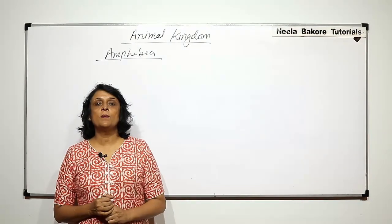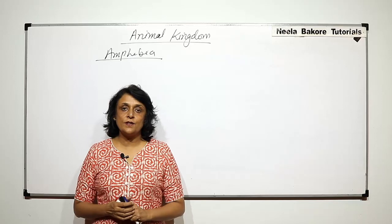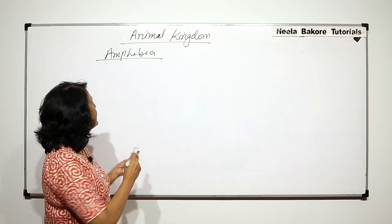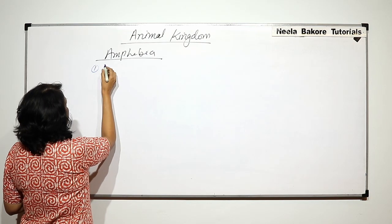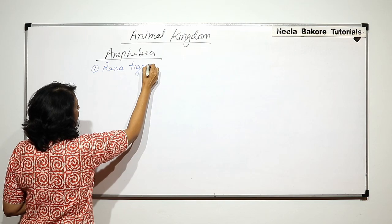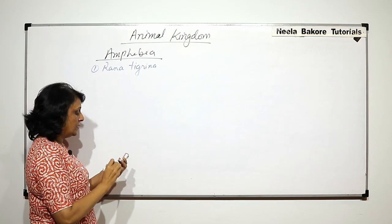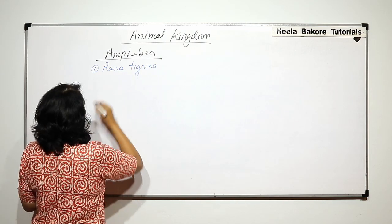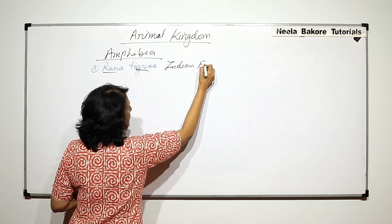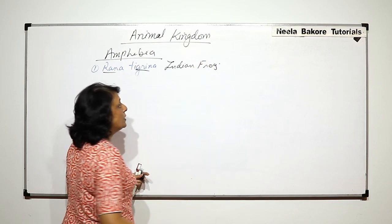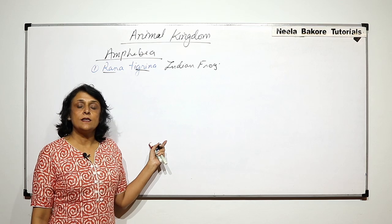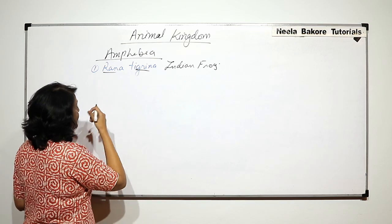In the previous part we talked about all the general characteristic features of Amphibia. Now we will take some important examples. The first example is Rana Tigrina, which is the common Indian frog. All the general characteristics are seen in frogs also, but there are some special things.